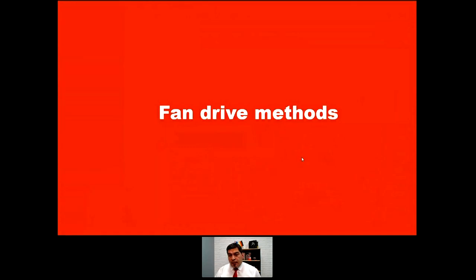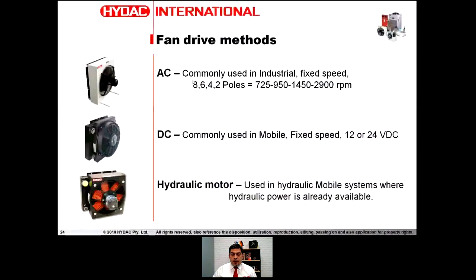There are three main fan drive methods: AC, DC, and hydraulic motor. AC — alternating current — is the standard electric motor, commonly used in industrial applications at fixed speed: eight-pole, six-pole, four-pole, or two-pole, corresponding to 725, 950, 1450, or 2900 RPM. DC is more commonly used in mobile applications, also at fixed speed, at 12 or 24 volts DC.